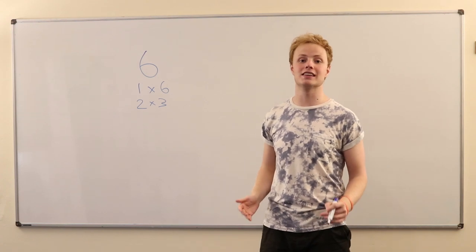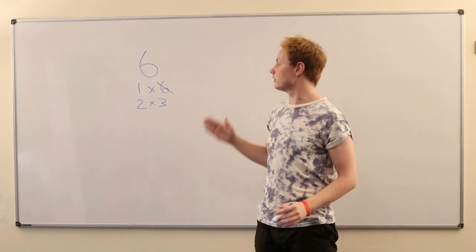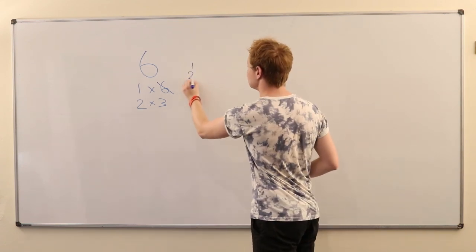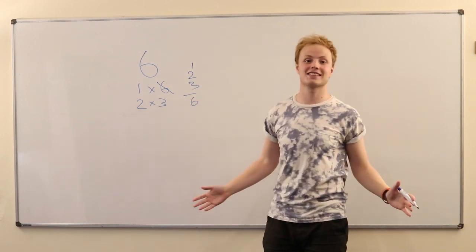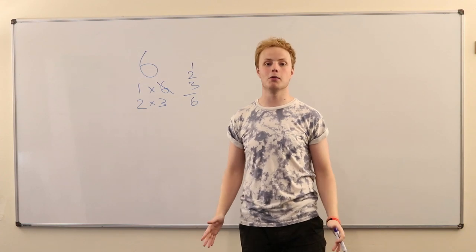And if we discount the number itself, we call these the proper divisors. So we get rid of that and we're left with the divisors one, two, and three. Add them together. And what do we have? We get six, which is the number we started with. Now this is exactly what we call a perfect number in maths.